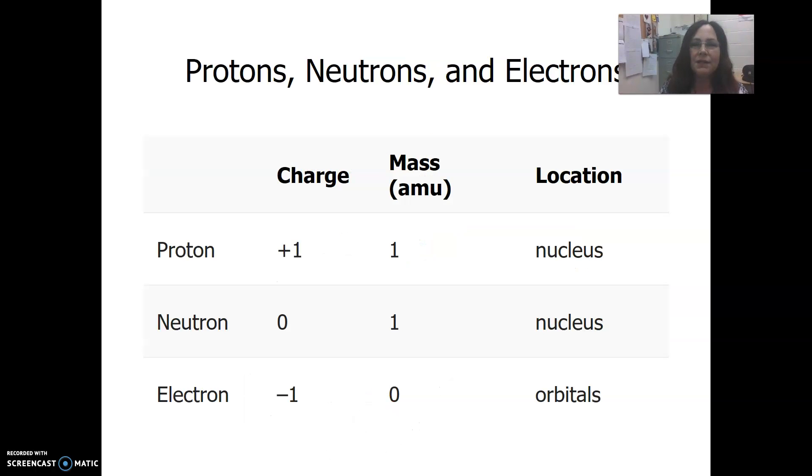This is a table that shows the charge and location of the subatomic particles. Make sure you know that a proton has a charge of positive one and is located in the nucleus. The neutron has a neutral or zero charge, also located in the nucleus. The electron has a negative charge and is located outside the nucleus in orbitals, or electron energy levels. Sometimes you'll hear them called electron shells.